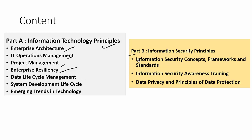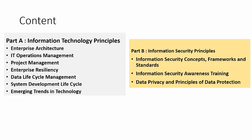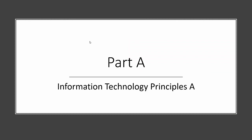Part B covers information security. This is one of my favorite areas. In Part B, they talk about information security concepts, frameworks, awareness training, and the effectiveness of awareness training — because the human is the weakest link in the organization, and that can be mitigated with regular training. They also cover data privacy and the principles of data protection.